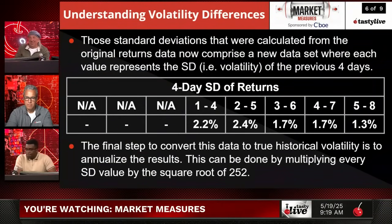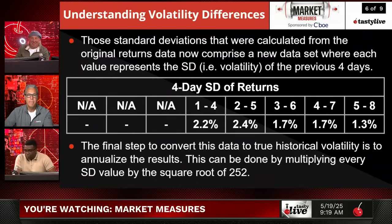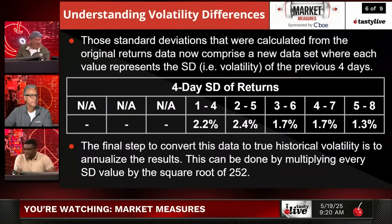On this slide, we see those standard deviations calculated from the original return data now comprise a new set where each value represents the standard deviation of the previous four days. For the first three days we don't have any data because we roll after four days. 2.2 is the standard deviation from day one to day four, continuing up to 1.3 which is between days five and eight.